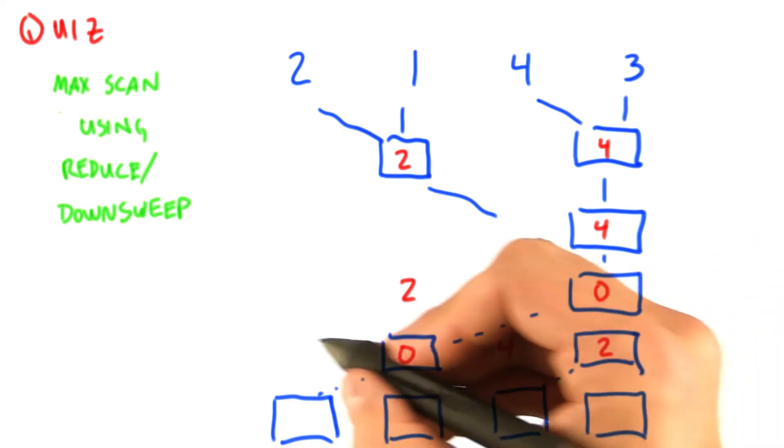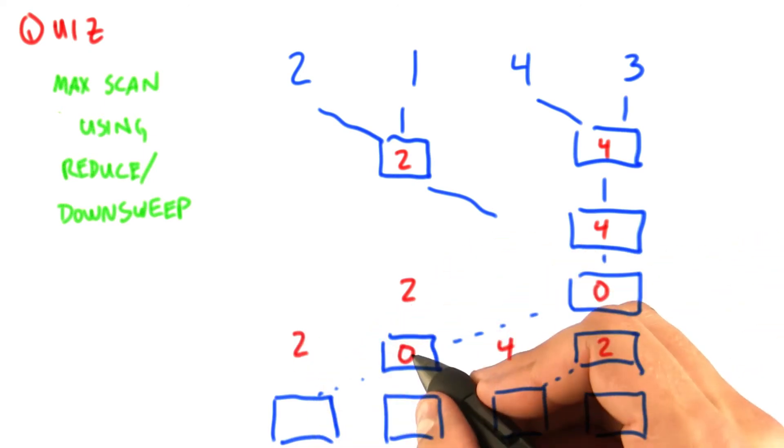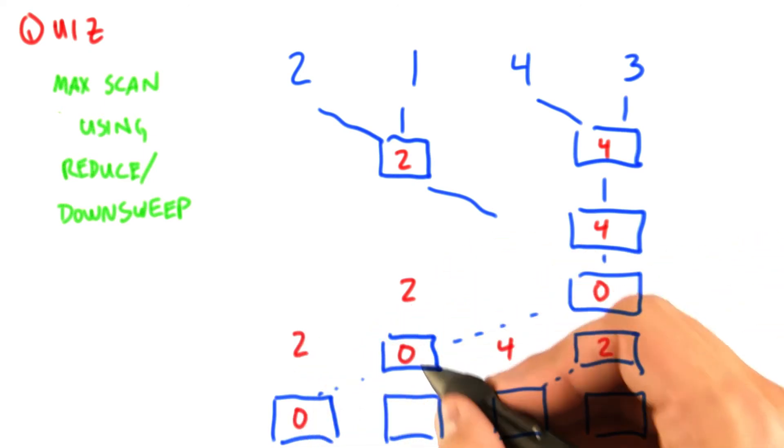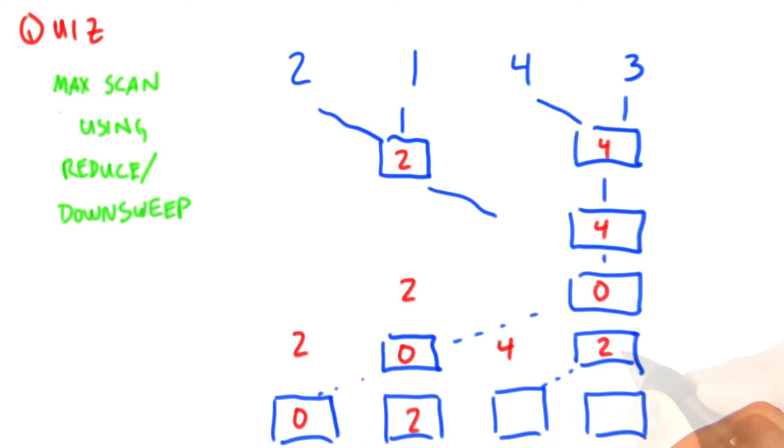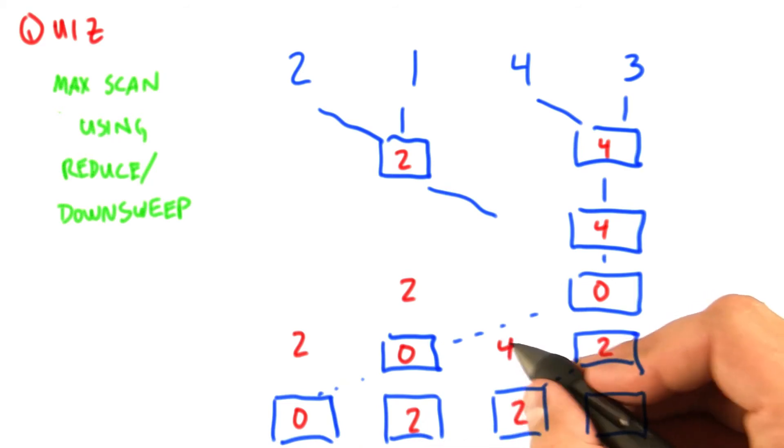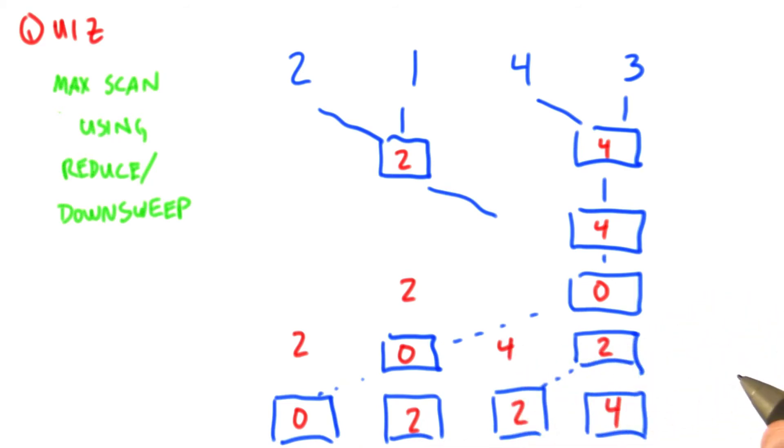Okay, now we'll drag down these intermediate values here. So we will copy this to the left, and then 2 max 0 gives us 2. We'll copy to the left, and then 2 max 4 gives us 4, and then we're complete.